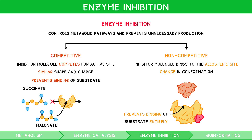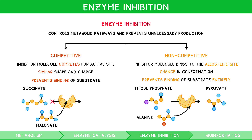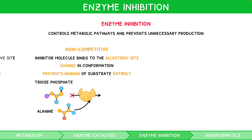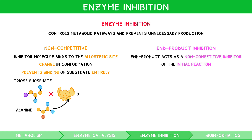An example to learn is the inhibition of the conversion of triosephosphate to pyruvate by pyruvate kinase. Here, alanine binds to the allosteric site on pyruvate kinase and prevents triosephosphate from binding to pyruvate kinase. It is worth noting that when the end product of a metabolic pathway acts as a non-competitive inhibitor to the initial reaction, this can be termed end product inhibition.